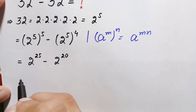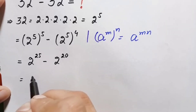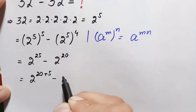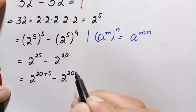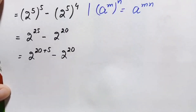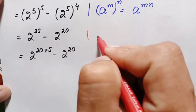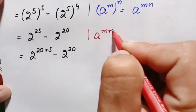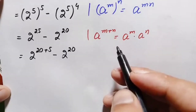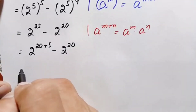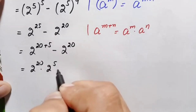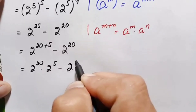We rewrite 2 raised to power 25 by expressing 25 as the sum of 20 plus 5, giving us 2 raised to power 20 plus 5, minus 2 raised to power 20. Applying the identity a raised to power m plus n equals a raised to power m times a raised to power n, the first term becomes 2 raised to power 20 times 2 raised to power 5, minus 2 raised to power 20.